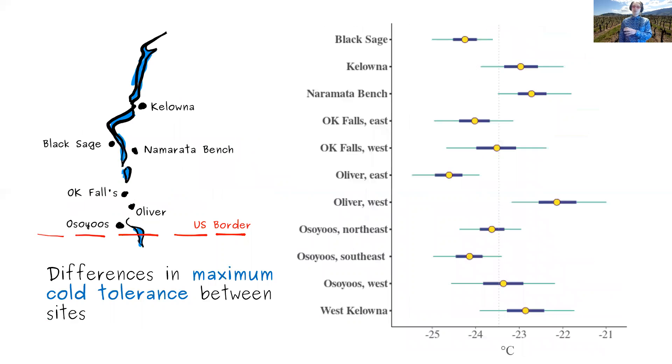We also found, as expected, quite a lot of variation between sites, with warmer sites having vines with a few degrees less cold tolerance than cooler sites. And this difference is a very similar magnitude of difference to that of the varieties.